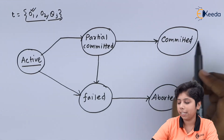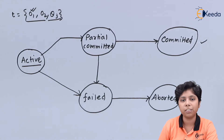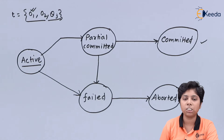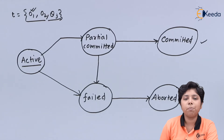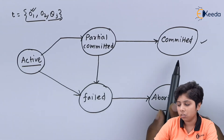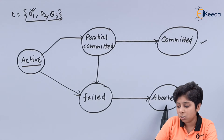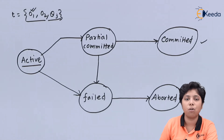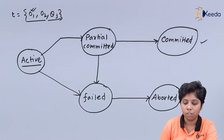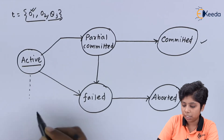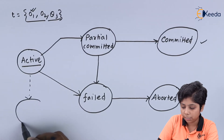In the final step, the transaction can either be committed or aborted. If the transaction is neither committed nor aborted, we say the transaction has been terminated. Terminated means it has not completed its execution but also has not been formally aborted — due to CPU problems or other issues, it just terminates. The transaction can go from the active state to the terminated state.